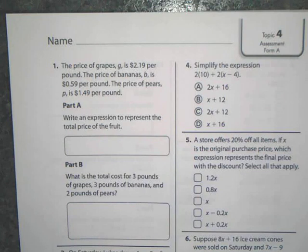Okay, you're live. Question number one. The price of grapes, G, is $2.19 per pound. The price of bananas, B, is $0.59 per pound. The price of pears, P, is $1.49 a pound. Write an expression.